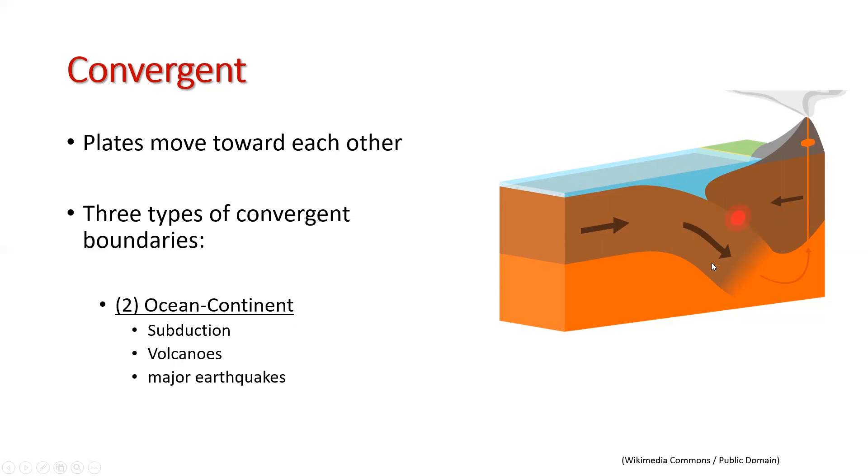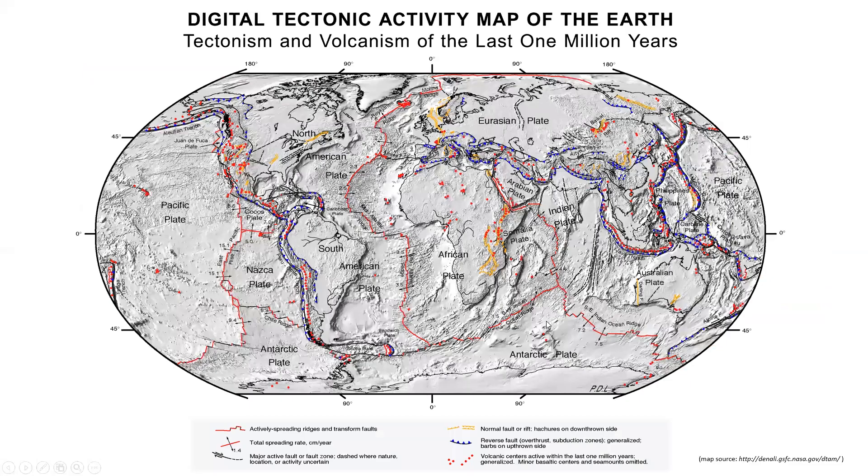The oceanic plates can get subducted underneath the other plate because oceanic lithosphere tends to be denser than other plates, especially the continental lithosphere. In addition to subduction, these boundaries are also characterized by volcanoes and big earthquakes. Here is an example of ocean-continent boundaries.